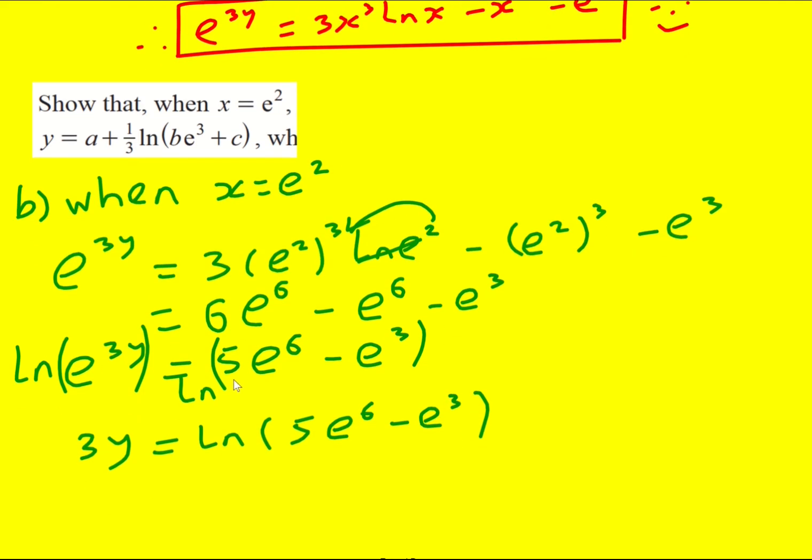Now I can see looking at the answer they want me to write it in a particular form with a third, so I'm going to divide by 3 in a minute, but there's a constant here so I need to separate the logs and that's going to involve factorizing out the e cubed. So I can write it as ln of e cubed times 5 e cubed minus 1, and the reason I do that is that now I can write it as ln e cubed plus ln of 5 e cubed minus 1.